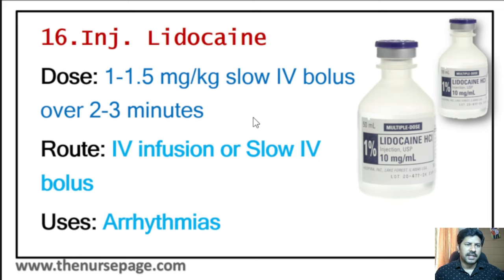Nineteenth injection is ondansetron, commonly known as Emeset. Dose is 4 to 8 milligram. Route is intravenous. Uses include severe nausea and vomiting.